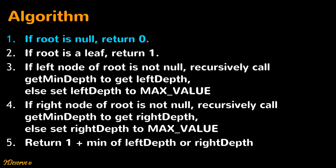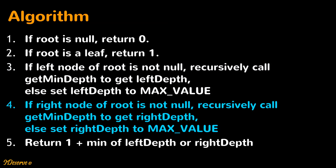Now let's have a look at the algorithm for solving this problem. These steps will be explained in detail with an example in subsequent slides, so do not worry if you do not get it right away. If root is null, return 0. If root is a leaf, return 1. If the left child is not null, recursively call get min depth to get left depth, else set left depth to max value. If the right child is not null, recursively call get min depth to get right depth, else set right depth to max value. Finally, return 1 plus the minimum of left depth and right depth.